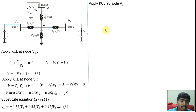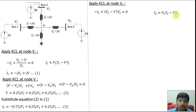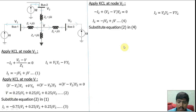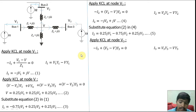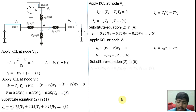Apply KCL at node V2: −I2 + (V2 − V)·Y2 = 0, giving I2 = V2·Y2 − V·Y2. Substituting Y2 = −j and the expression for V, we get I2 expressed in terms of V1, V2, V3. Then apply KCL at node V3: I3 = (V3 − V)·Y3. Substituting Y3 = −j and the expression for V, we get: I3 = 0.25j·V1 + 0.25j·V2 − 0.75j·V3.